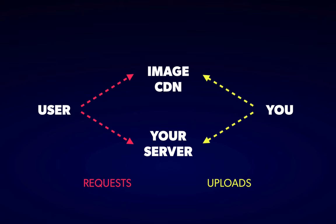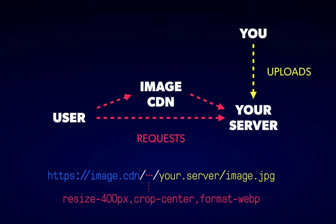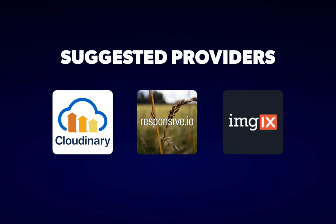Most people think of an image CDN as just solving the file management problem. You upload a single master image and tell it what sizes and formats to generate, which is useful, but to me it's nowhere near as useful as using the CDN in between your customers and your site — making the CDN an on-demand image processor. You simply construct a URL with some metadata about the image you want and the URL of the source, and the CDN will fetch, process, cache, and return it. Today I'm going to use Cloudinary for the demo because it's got quite a generous free tier. I've also used Responsive.io in the past, and should mention Imgix, which is used by Unsplash.com.